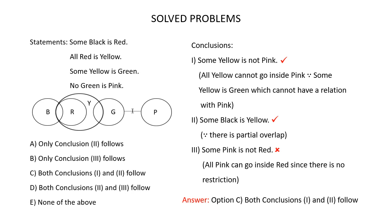Conclusion 2: Some black is yellow. In this Venn diagram you have black here and yellow here. As you can see, there is a partial overlap between black and yellow. This means this part of black is yellow — that is, some black is yellow. So the conclusion some black is yellow is correct. Conclusion 2 follows.